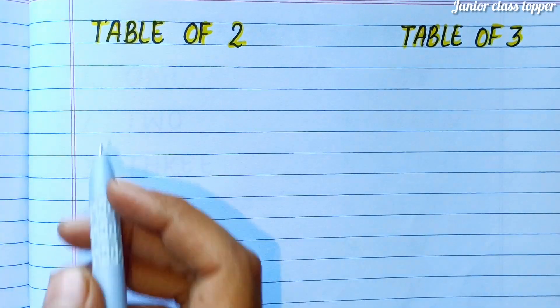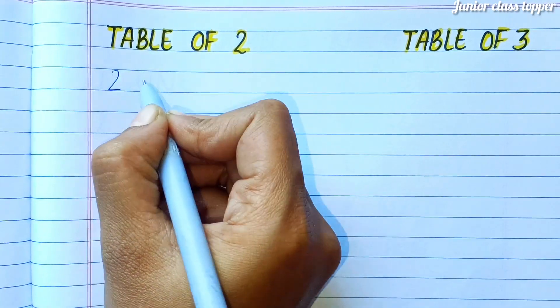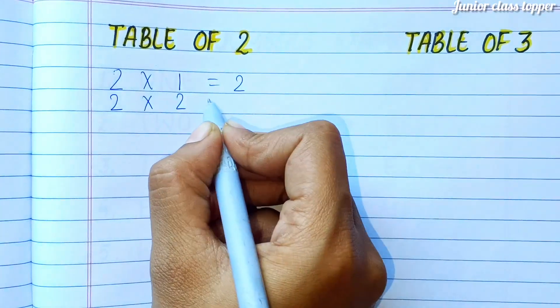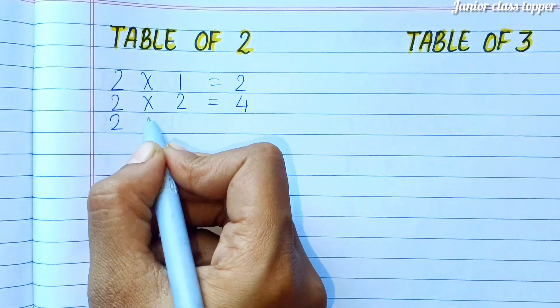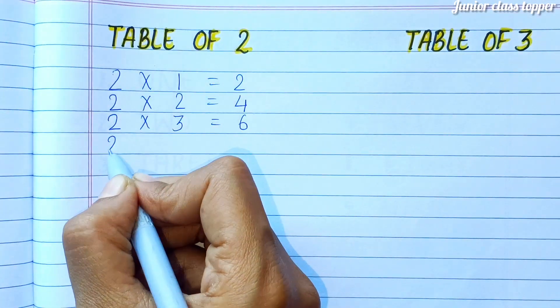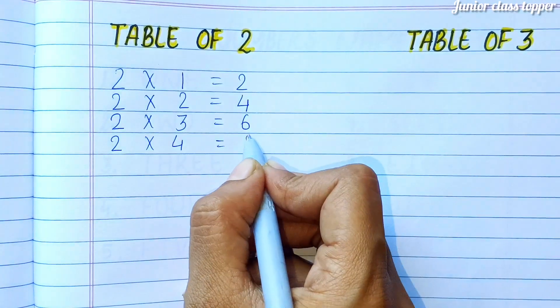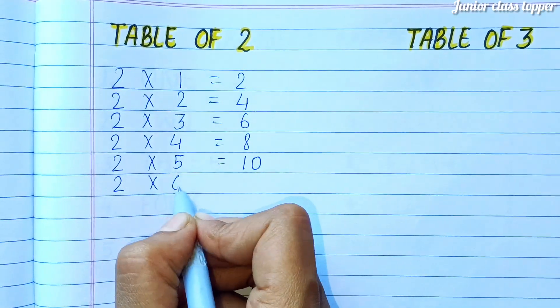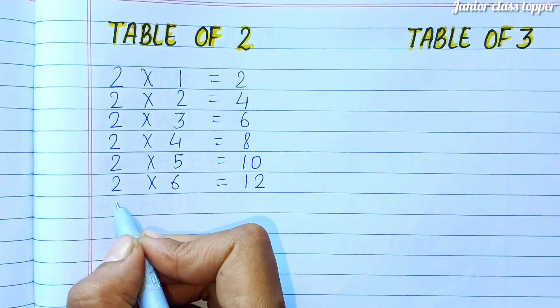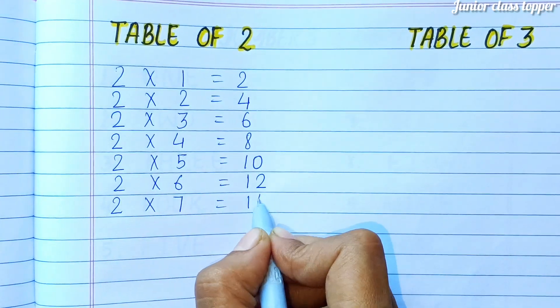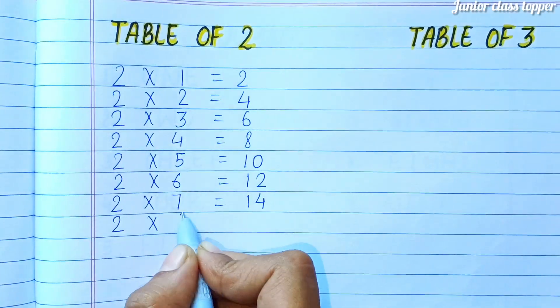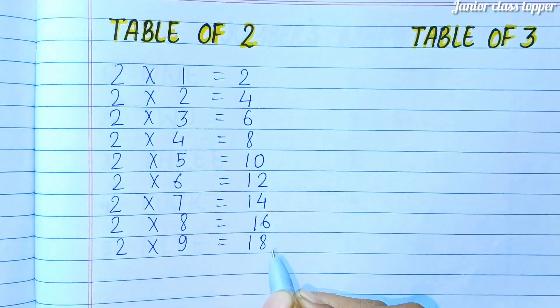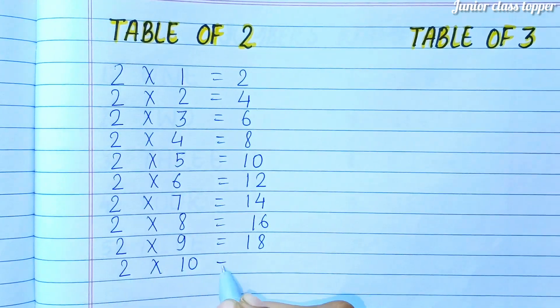Table of Two. Two ones are two. Two twos are four. Two threes are six. Two fours are eight. Two fives are ten. Two six are twelve. Two sevens are fourteen. Two eights are sixteen. Two nines are eighteen. Two tens are twenty.